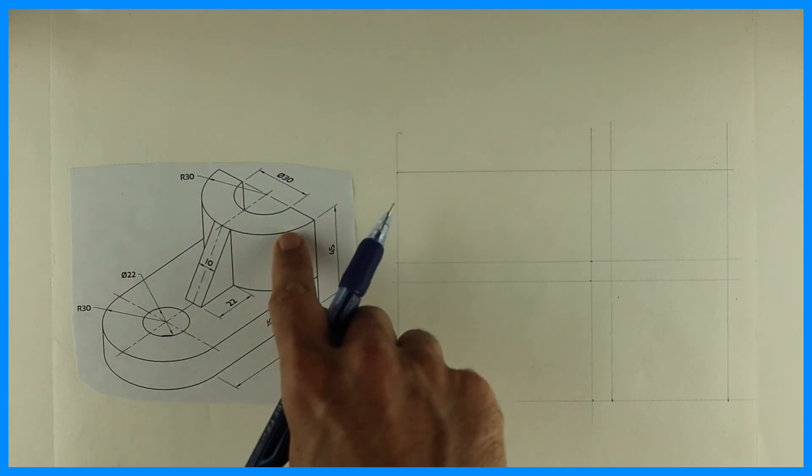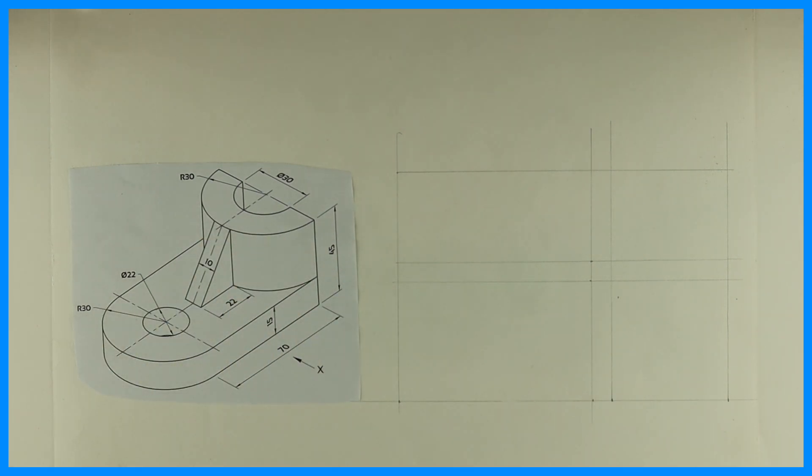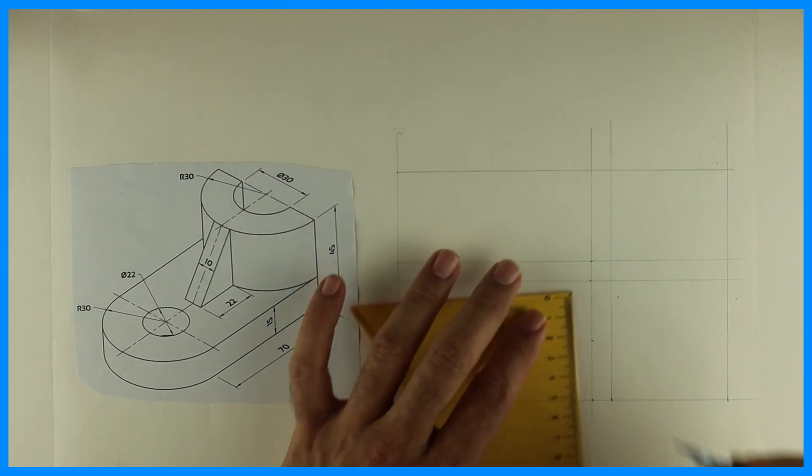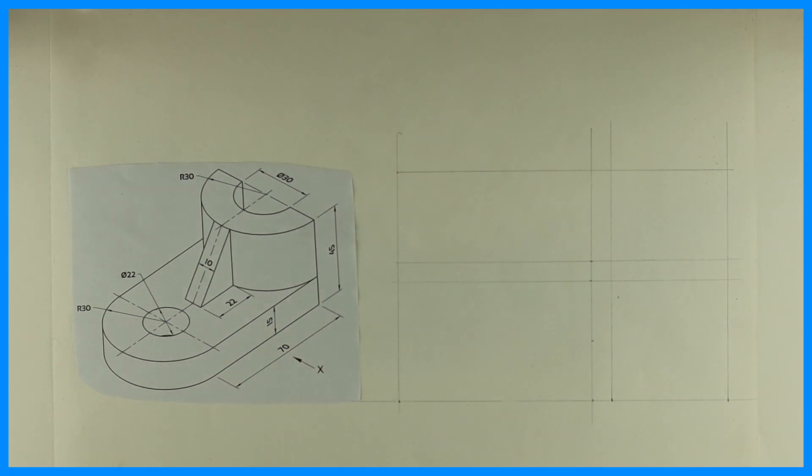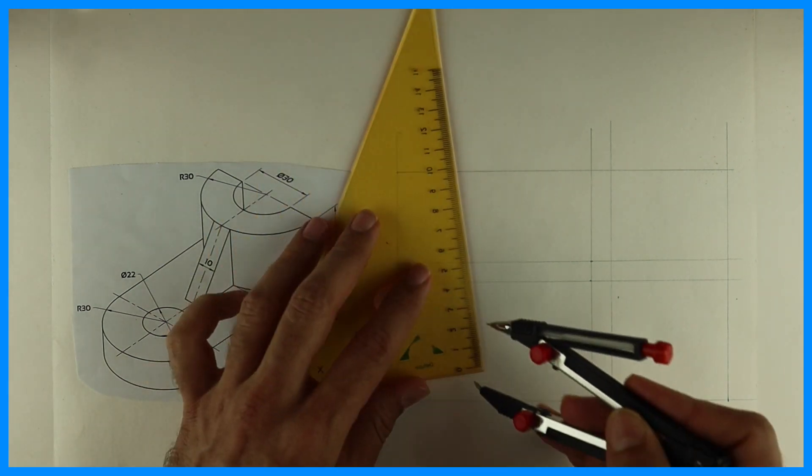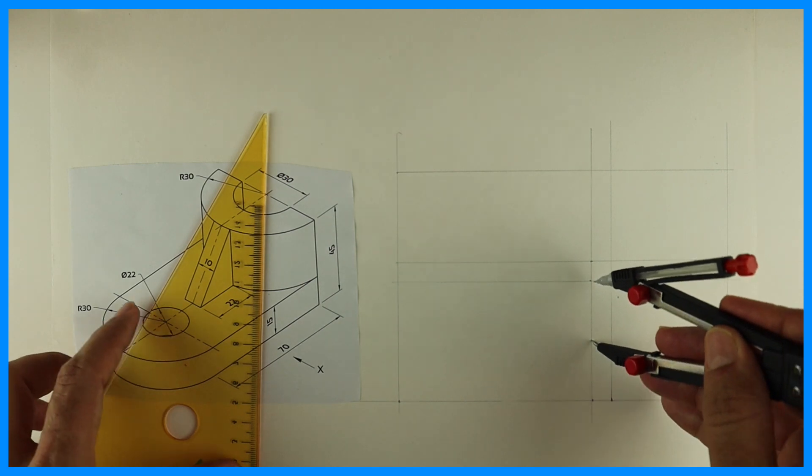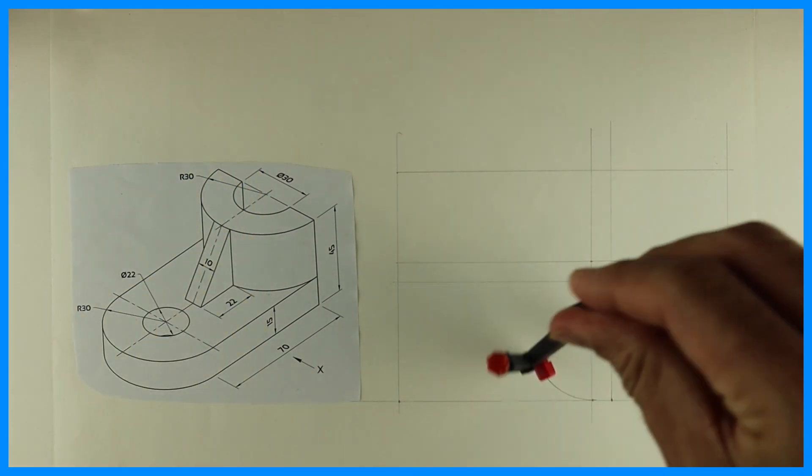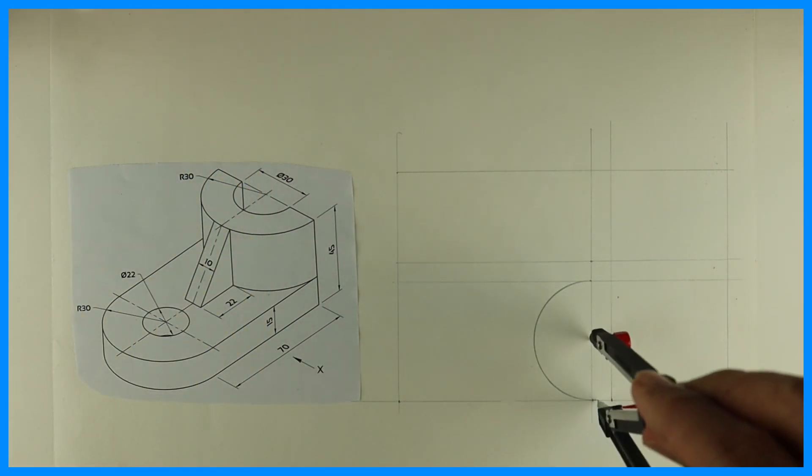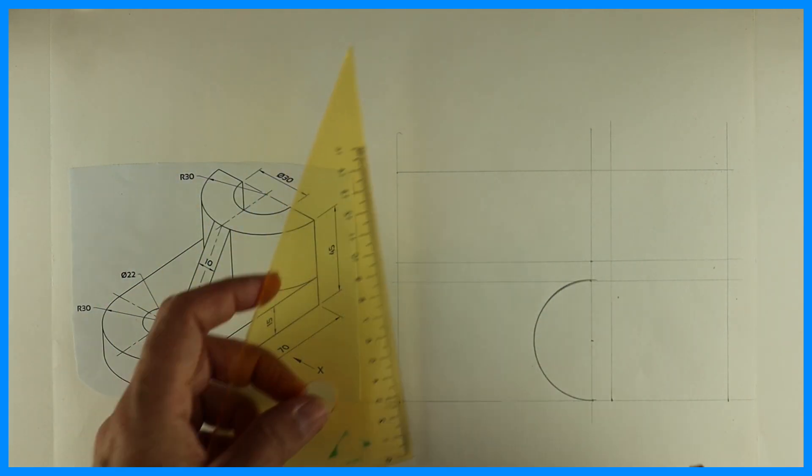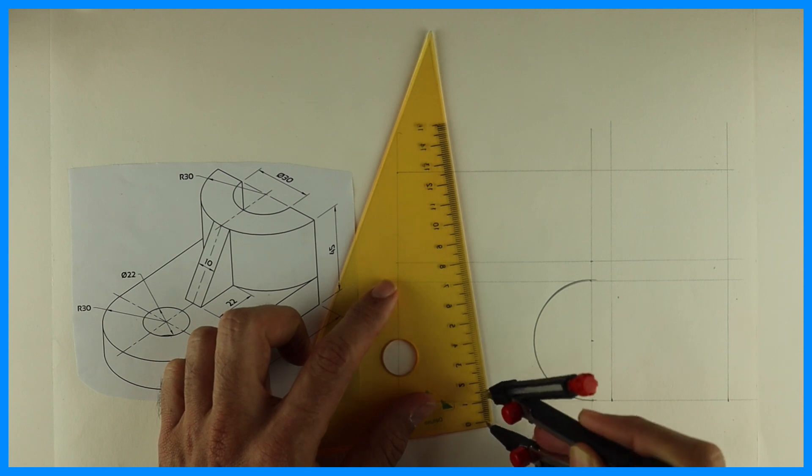First we'll start with top view. We are doing it in first angle, so you take midpoint in top view and draw radius 30. After drawing that, you can draw radius 15 also.